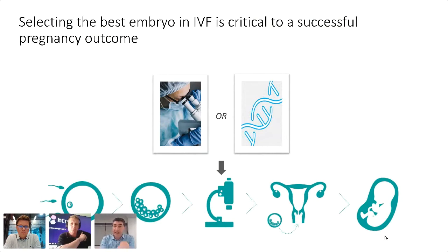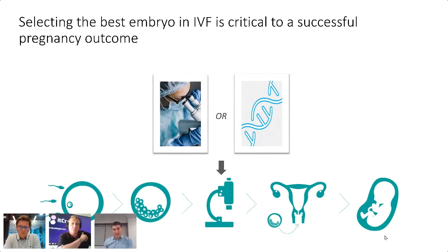Selecting a viable embryo is critical to a successful pregnancy outcome. What they do now is look down a microscope, manually grade it using a particular scoring system, and use that to rank the embryos and select one.